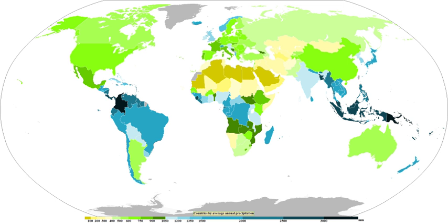In Hawaii, Mount Waialeale on the island of Kauai is notable for its extreme rainfall, as it has the second-highest average annual rainfall on Earth with 12,000 mm. Storm systems affect the state with heavy rains between October and March. Local climates vary considerably on each island due to their topography, divisible into windward and leeward regions. In South America, the Andes Mountain Range blocks Pacific moisture, resulting in a desert-like climate just downwind across western Argentina. The Sierra Nevada Range creates the same effect in North America, forming the Great Basin and Mojave Deserts.